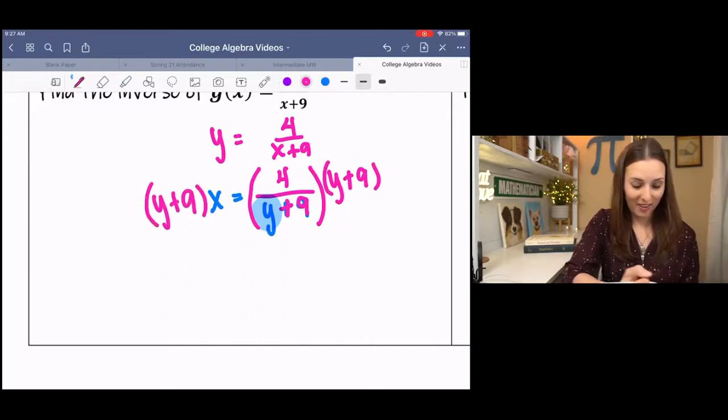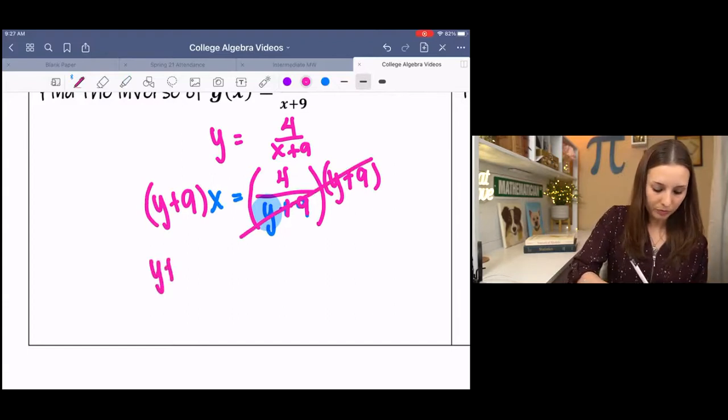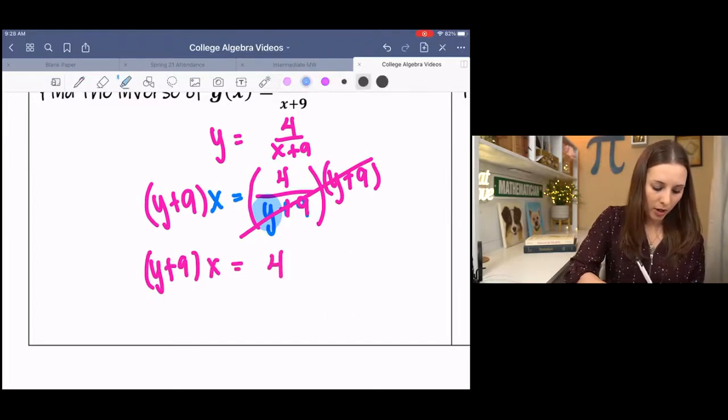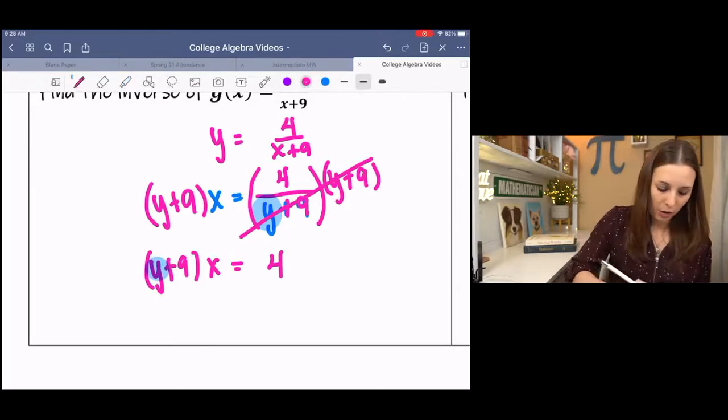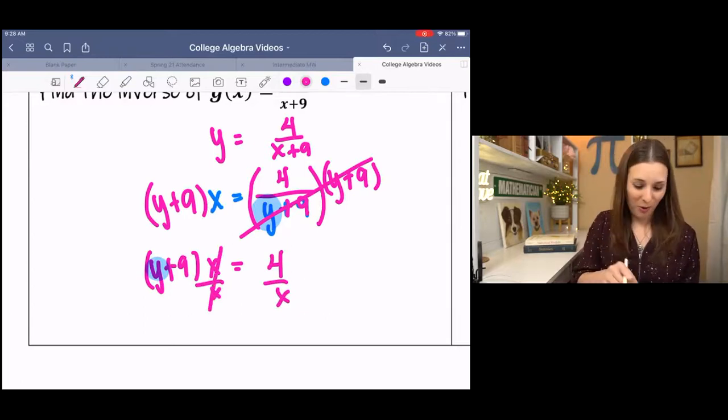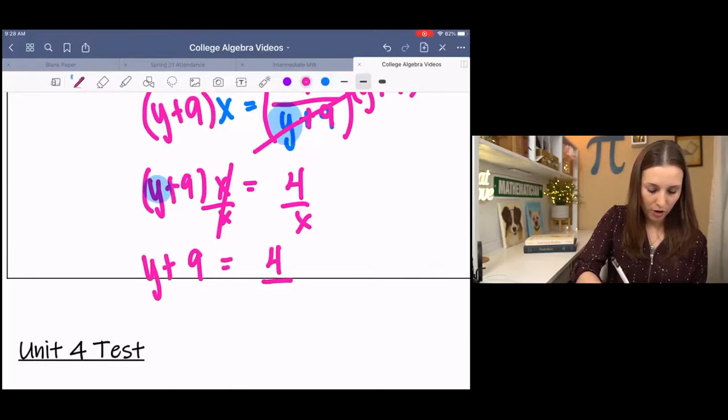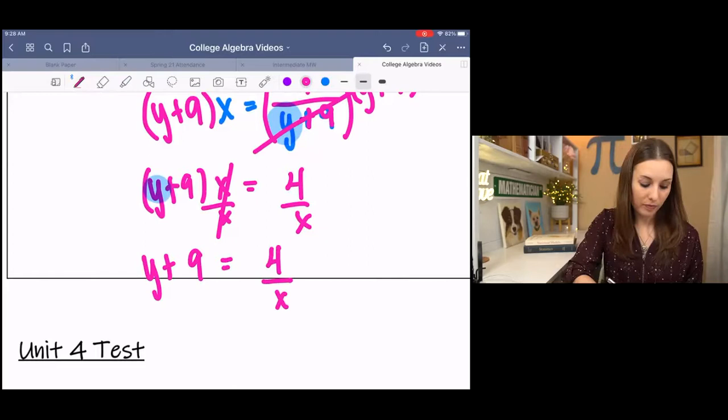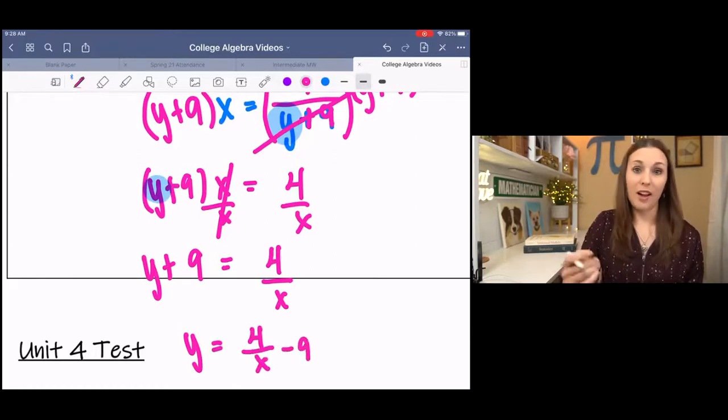And you might think, that's not going to help me, but bear with me. That divides to 1, simplifies to 1. I have Y plus 9 times X equals 4. I'm still trying to isolate Y. But I have that X outside. So if I divide by X, you may see where I'm going now. I've got Y plus 9 equals 4 over X. And then I have one more step. Subtract 9.